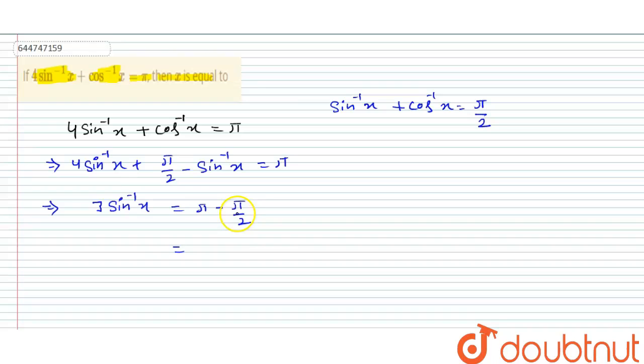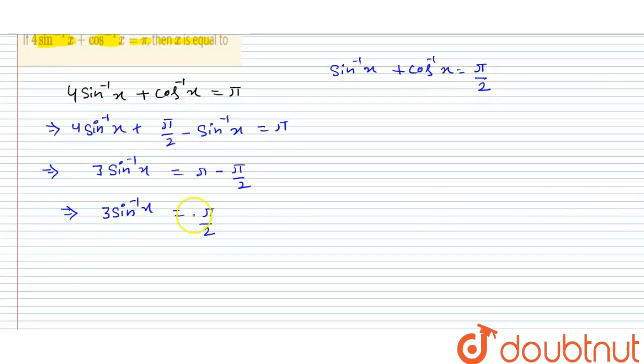When you subtract pi upon 2 from pi, you get pi upon 2. Now we have 3 sin inverse x equal to pi upon 2. Let's divide both sides by 3, so we get sin inverse x is equal to pi upon 6.